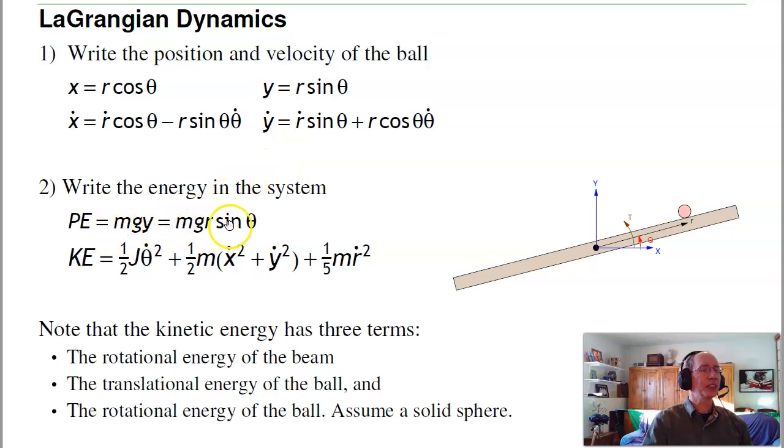The potential energy is mgy = mgr sin θ. The kinetic energy is ½J θ̇² (the rotational inertia of the beam) plus the translational velocity ½m(ẋ² + ẏ²), plus the rotation. Assuming a solid sphere, the rotational inertia is ⅕mr². Before we had 0.7m v², I separated it because if the ball isn't moving and the ball is further out and the beam is spinning, I have that rotational inertia plus the ball spinning.